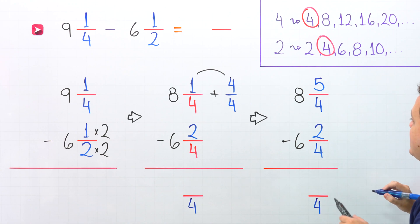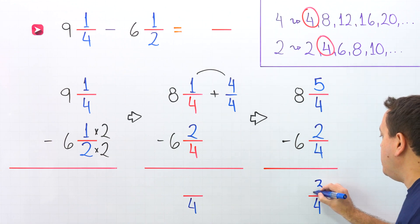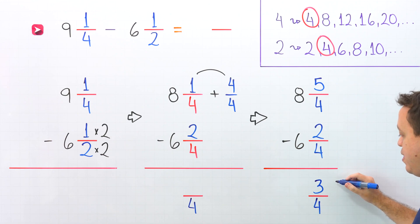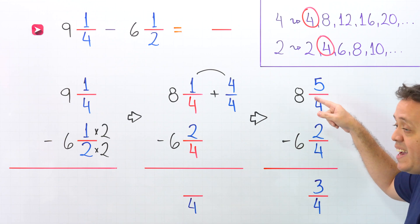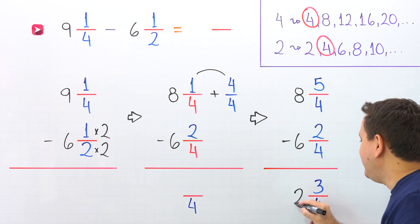4 one more time. And next, we'll subtract the numerators. 5 minus 2 give us 3. The difference of the fractions is 3 fourths. Finally, we'll find the difference of the whole numbers. 8 minus 6 give us 2.